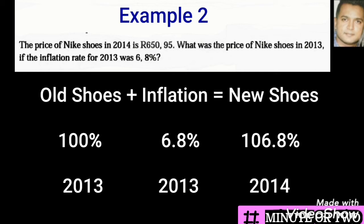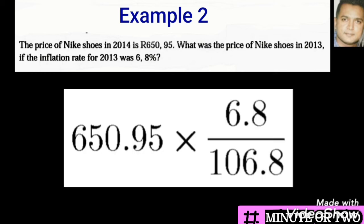All we are doing is working back in order to get the 100%, which we know is the price of the old shoes in 2013. So we write 650.95 — the price given to us — and multiply it by the inflation. The 6.8 is given, and the difference is that we add 100 to the 6.8 and put it below, then multiply through. When given the new price and inflation rate and asked to work back to the old price, this is the way we answer.